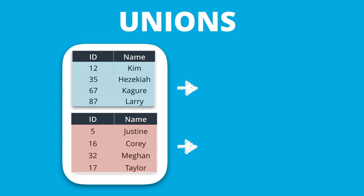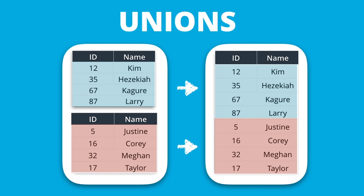Unioning allows you to take multiple data sets and deal with them as one. It's easier to format or clean up one large data set than to have to repeat these same operations across multiple data sets, and then bring them together afterwards.